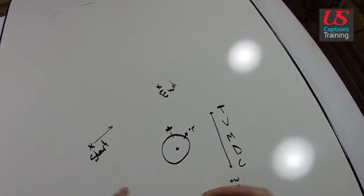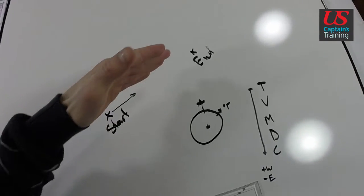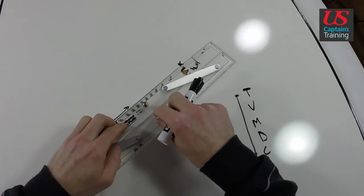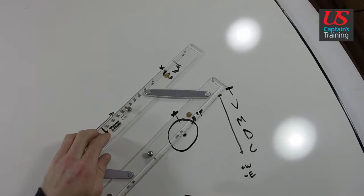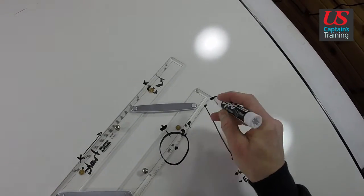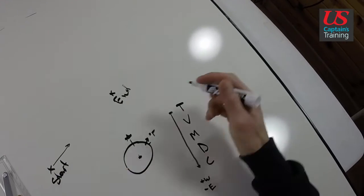So again in review, we find the start, we find the end, we put our parallel rules on those, we walk that down to the center of the compass. We know where we are going so we mark this side of the compass right from start to end and we take that degrees true.